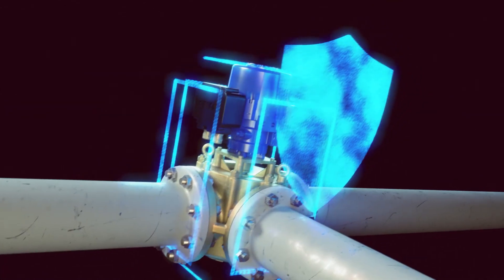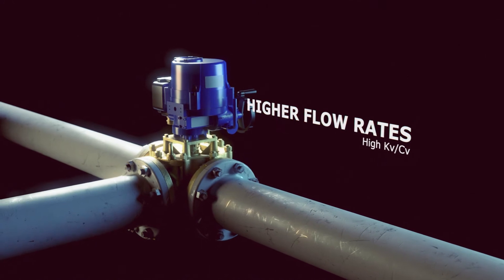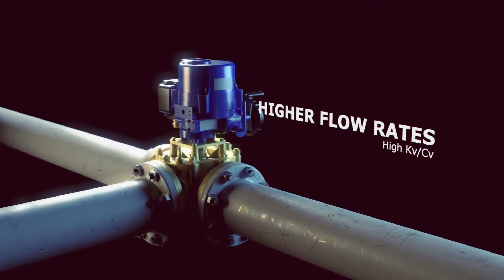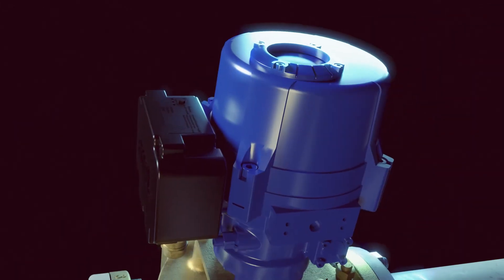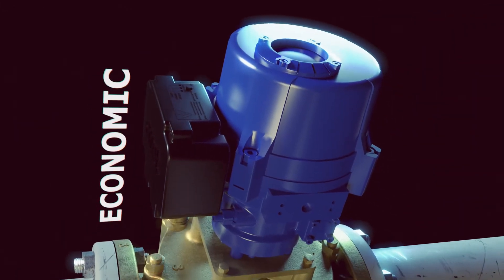Because the AMOT rotary valve has a higher flow rate compared to an equivalent size linear stroke valve, a smaller valve can be specified and still meet flow coefficient requirements. This saves money, making the G-Valve friendly to your bottom line.